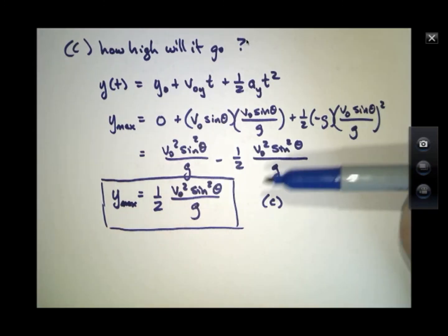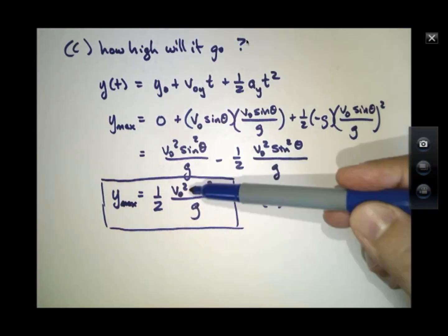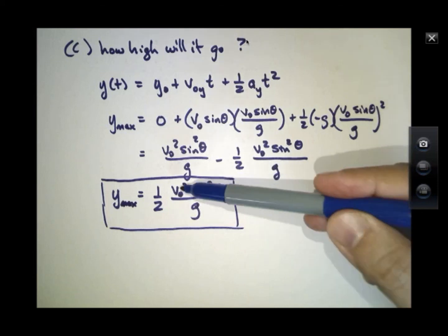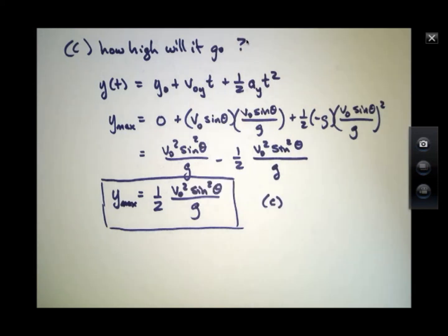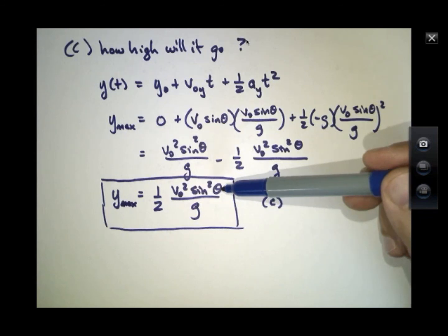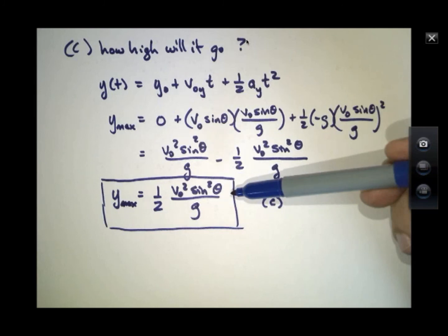Football players don't necessarily want the ball to go the highest. But if they did, they can get it to go higher by kicking it at higher speed, or by kicking it at an angle such that this sine goes to one. When does that occur? At 90 degrees.